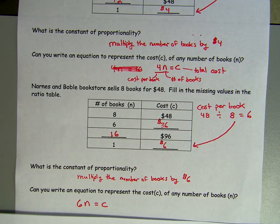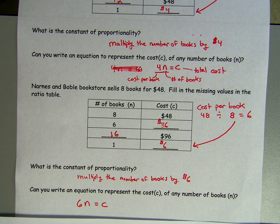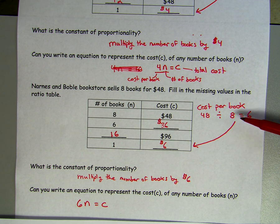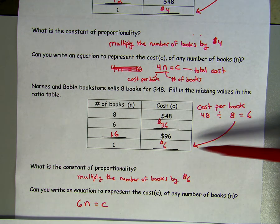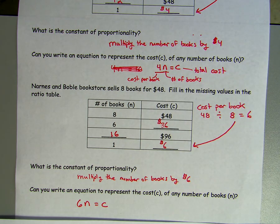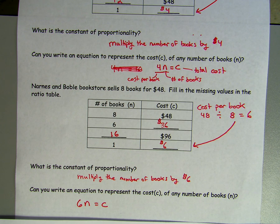The second example is very similar: eight books for $48 at Barnes & Noble. My unit rate is $48 divided by 8, which equals $6 per book. I filled in the rest. The constant rate is multiply the number of books by $6, and my equation is 6n equals c, where 6 is the cost of each book, n is the number of books, and c is the total cost.